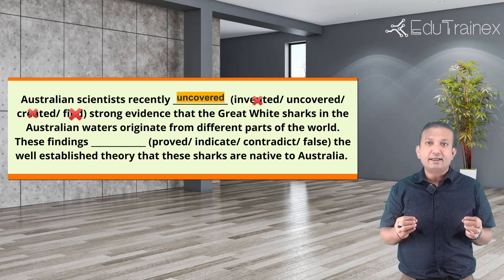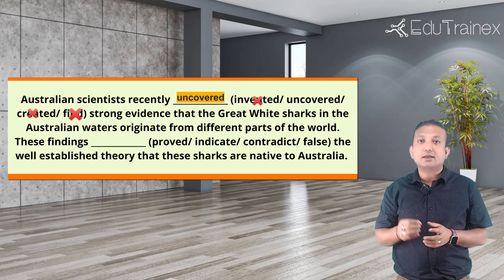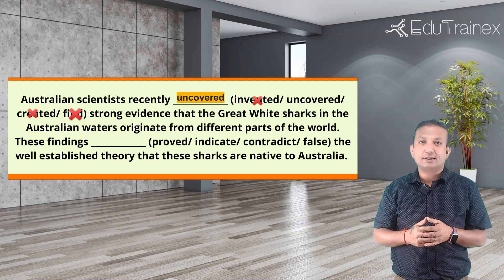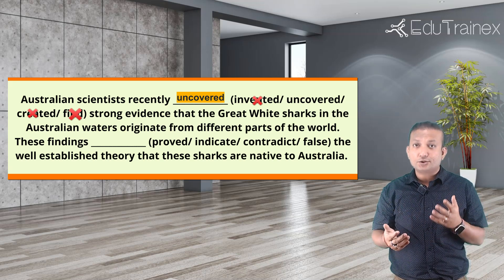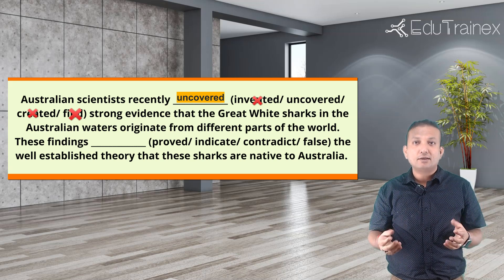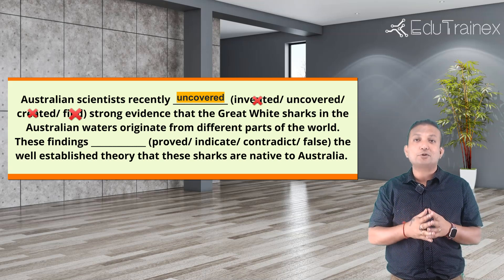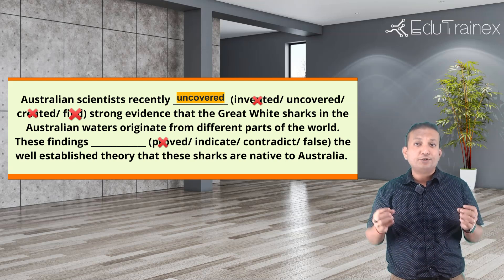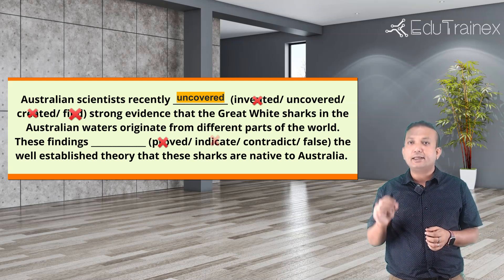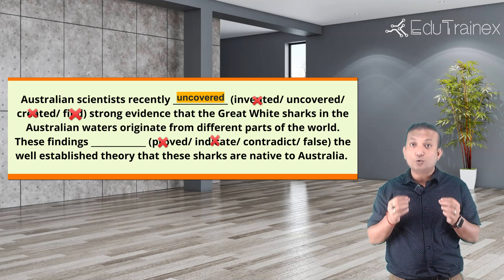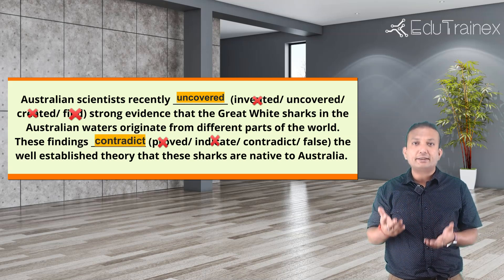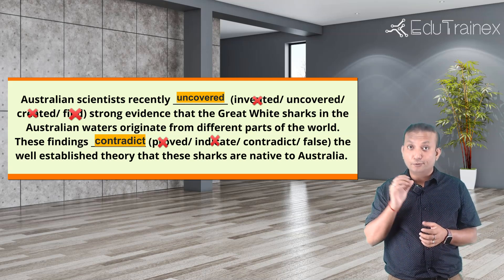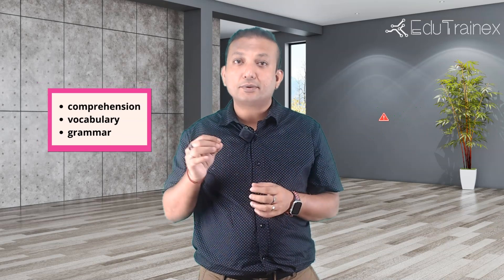The next sentence says: 'These findings [blank] the well-established theory that these sharks are native to Australia.' Relate it to the first sentence — is it supporting or going against the theory? Recent evidence showed sharks originate from different parts of the world, but the established theory said they are native to Australia, so it is saying the opposite. Using grammar, eliminate 'proved' which is past tense — we need present tense. 'Indicate' can also be eliminated. Between 'contradict' and 'false,' only 'contradict' collocates here — contradicting a theory is a very common collocation and fits meaningfully. To cross 79 in writing, out of 5 options you need to get at least 4 correct, so you must improve your comprehension, vocabulary, and grammar skills.